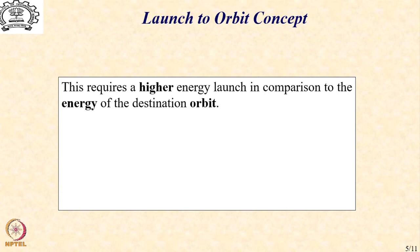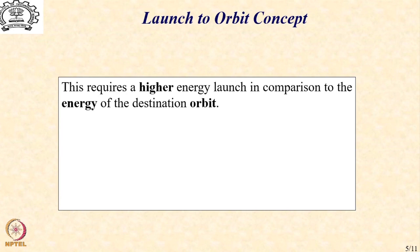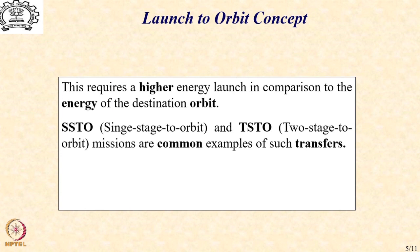Of course, it is not very difficult to realize that this would require a higher energy launch in comparison to the energy of the destination orbit, because you are in a chase orbit and you must move faster in order to ensure that your destination is reached in the desired time slot, and in order to do that you must spend extra energy to accelerate the vehicle. SSTO, that is single stage to orbit, or even two stage to orbit — TSTO — missions are common examples of such fast transfers.